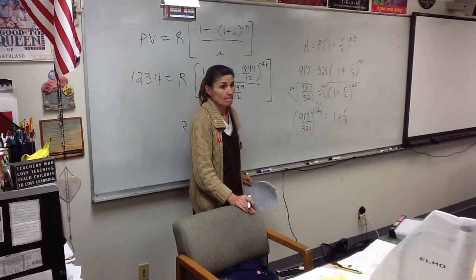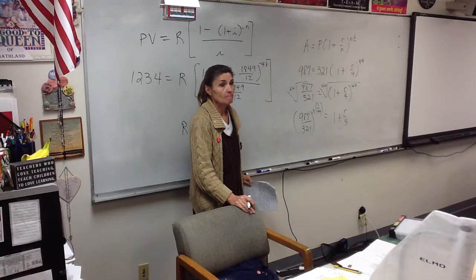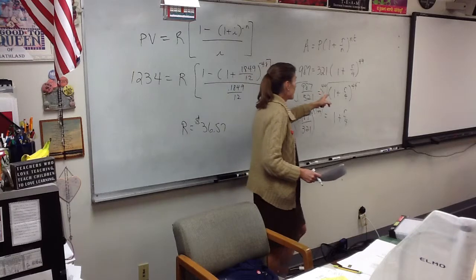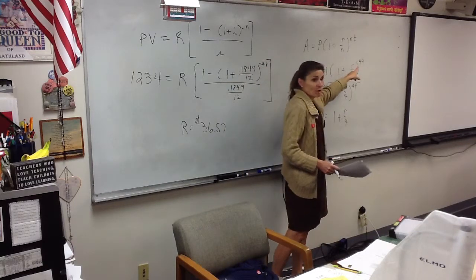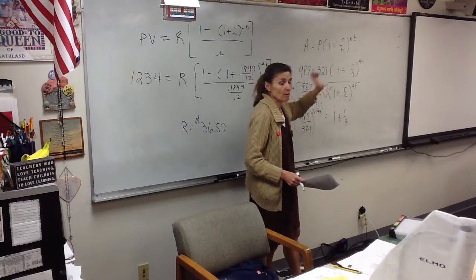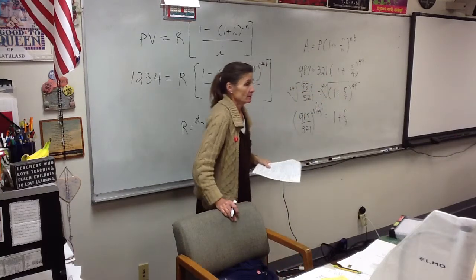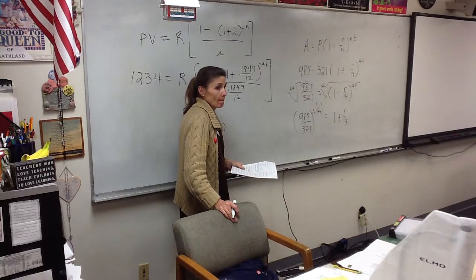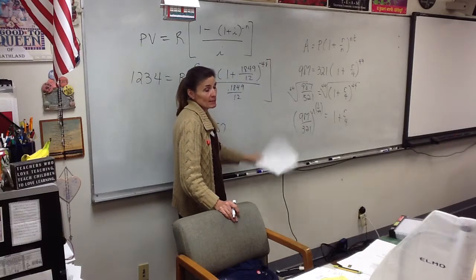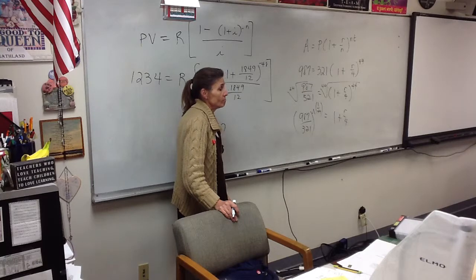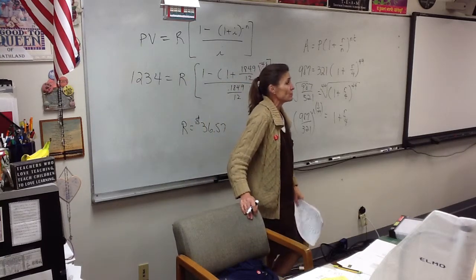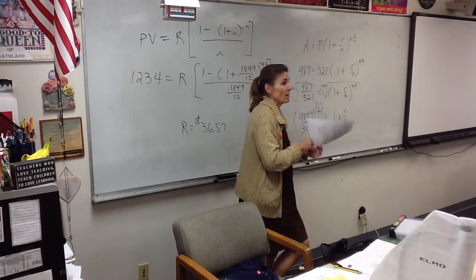If it had been a negative 44th power, would you have just done 1 over the negative 44th? Oh, no, no, no, no. If this, first of all, that's never going to be negative. Because that's never going to come out negative in this formula. That will never be negative. You don't do anything except type it in. Anything else from review 1, review 2, or practice test 1?